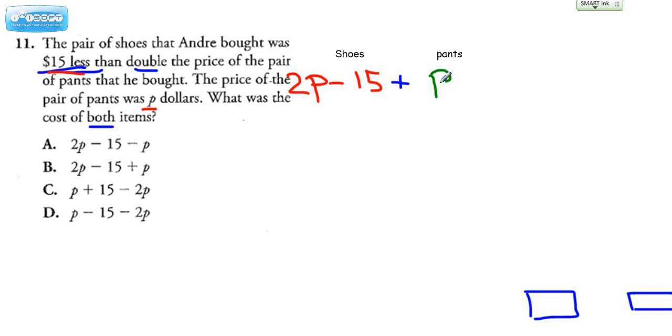So here we have the 2P plus 15, so that checks. But here it's not add, it's subtract. So for this reason, we're going to reject that. Here we have the 2P minus 15, there it is, plus P. So that's a contender. Here we have P plus 15 minus 2P. That's off the list. And here we're looking at P minus 15 minus 2P. So that's definitely not right because we're subtracting. All right, so it looks like we're going with choice B for number 11.